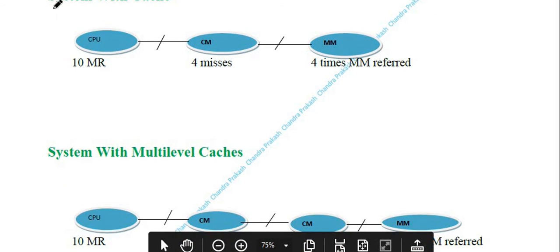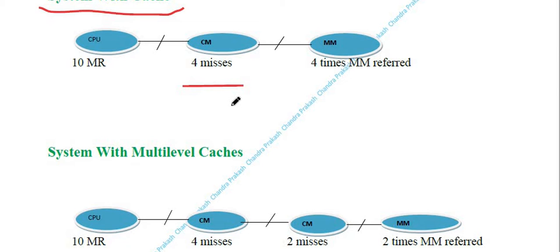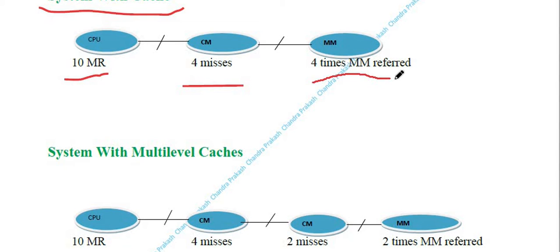The second case is a system with cache — there is one cache memory. By using cache memory we can enhance system performance. When the CPU generates 10 memory requests, 6 requests will be fulfilled by the cache memory (cache hits), and 4 requests are not found in cache. Those 4 misses will be fulfilled by the main memory, so main memory is accessed 4 times.